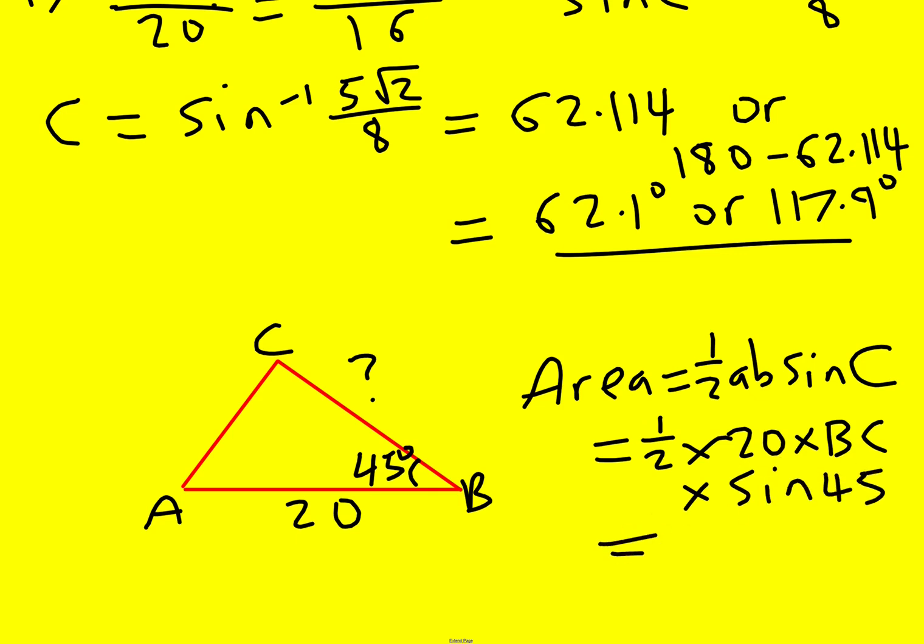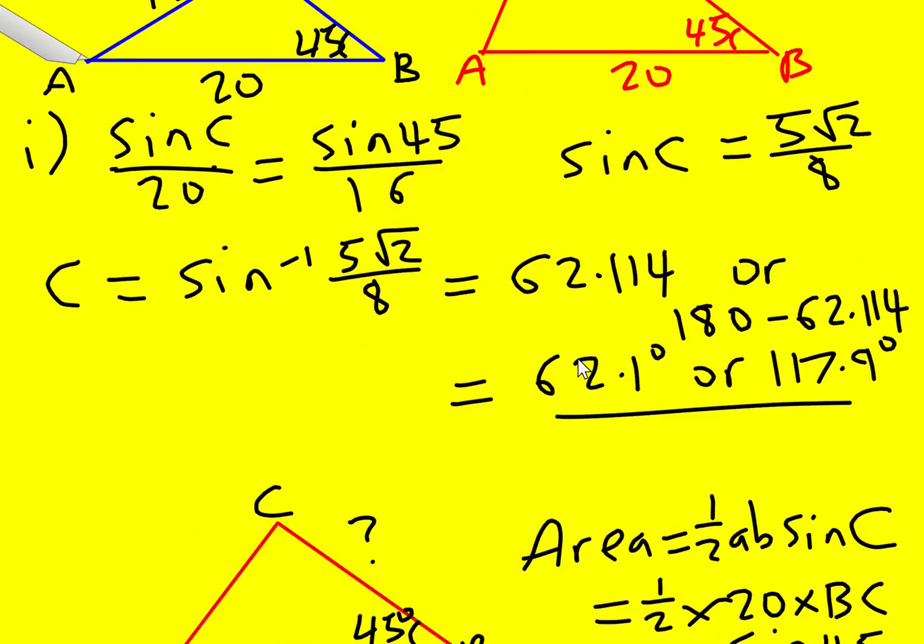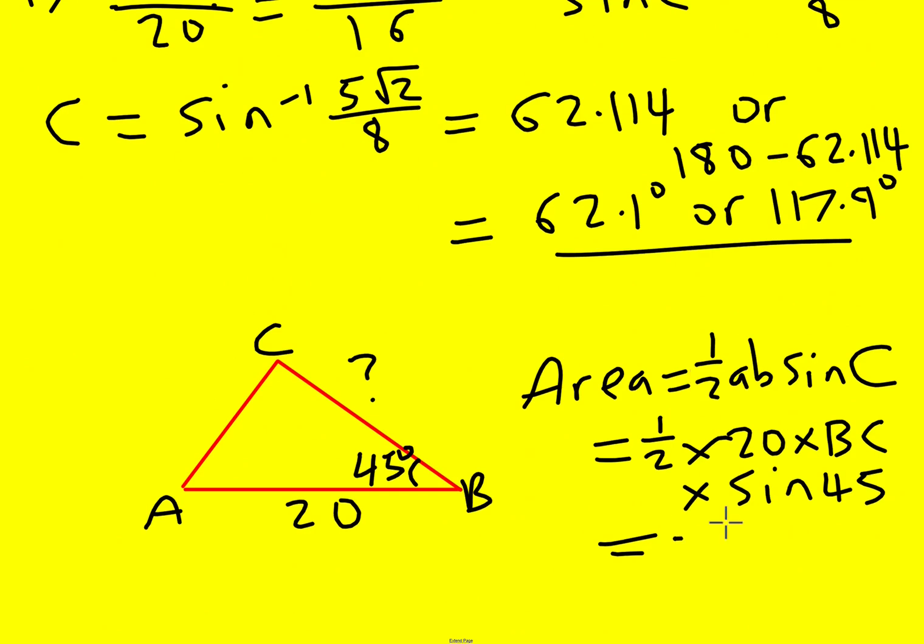it's going to be half times 20 times BC times sine 45. And that is going to equal 75 root 2.